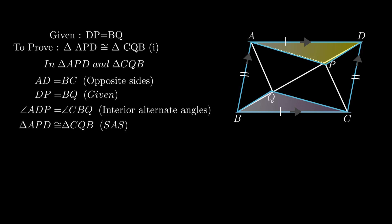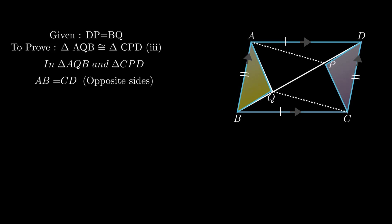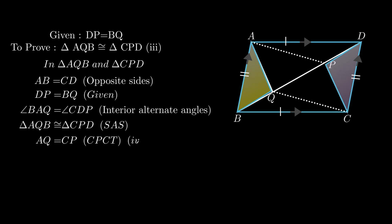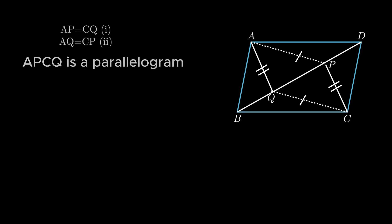Since triangles containing segments AP and CQ are proved congruent, by CPCT, AP = CQ. Now to prove triangle AQB congruent to triangle CPD: AB = CD as opposite sides of parallelogram are equal; DP = BQ; angle BAQ = angle CDP as interior alternate angles are equal. By the side-angle-side rule, triangle AQB is congruent to triangle CPD. By CPCT, AQ = CP. Using these results, opposite sides of quadrilateral APCQ are equal, so APCQ is a parallelogram.